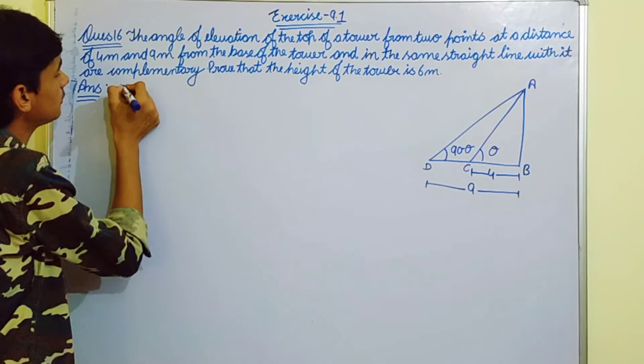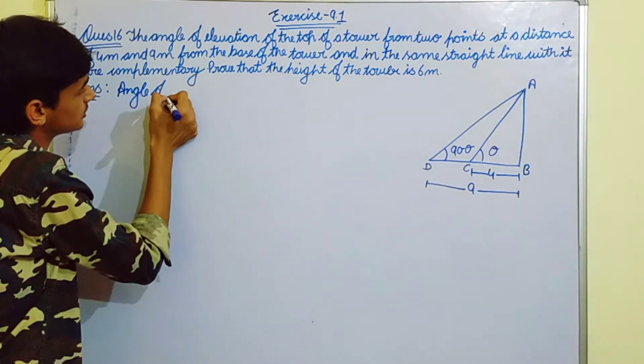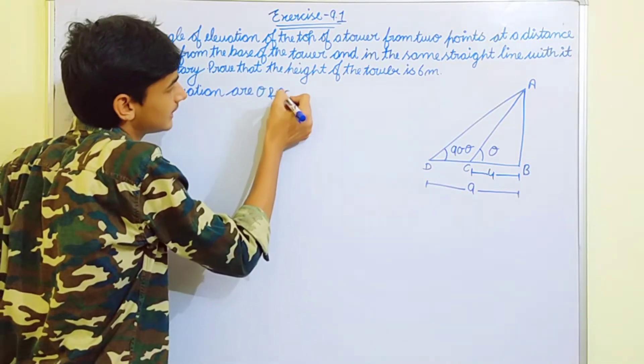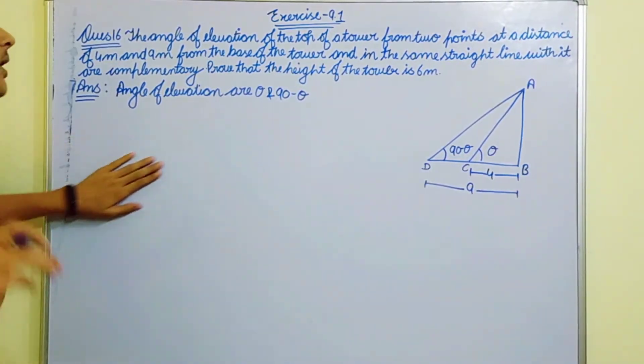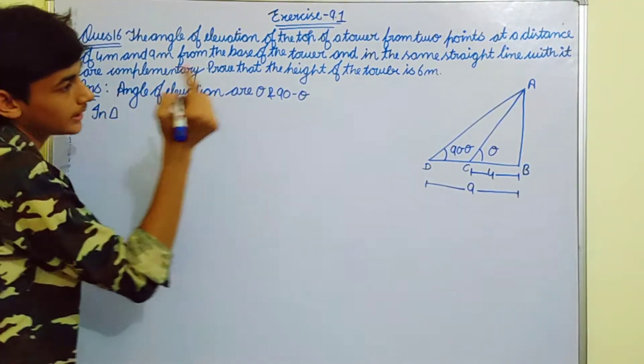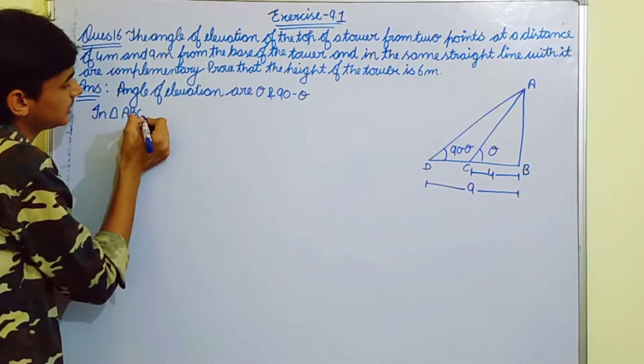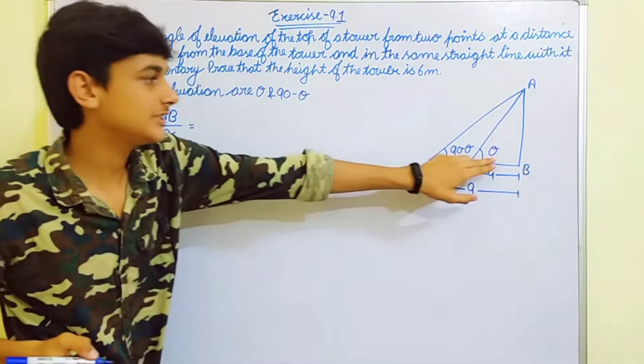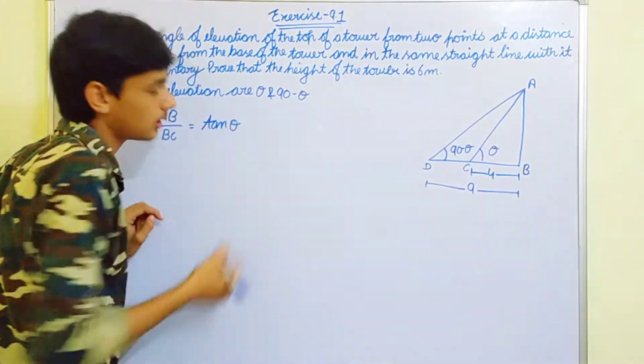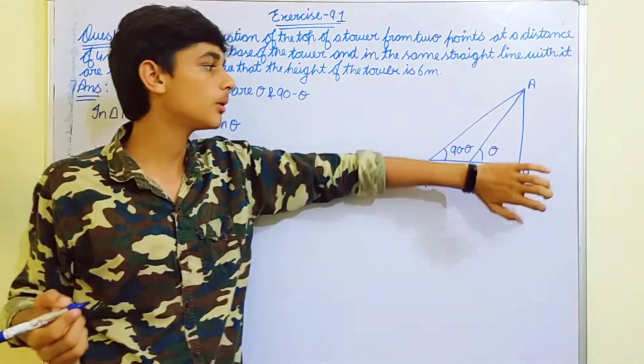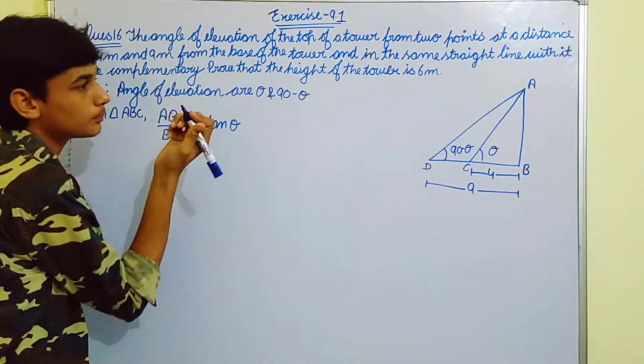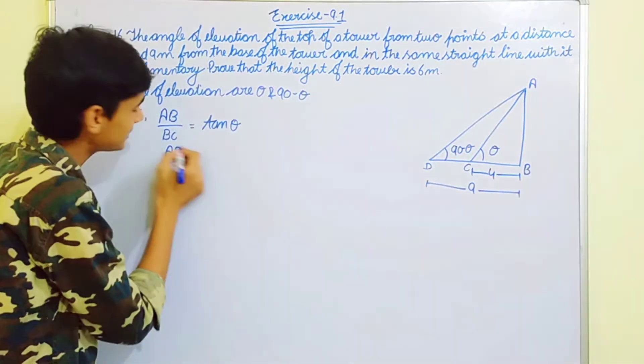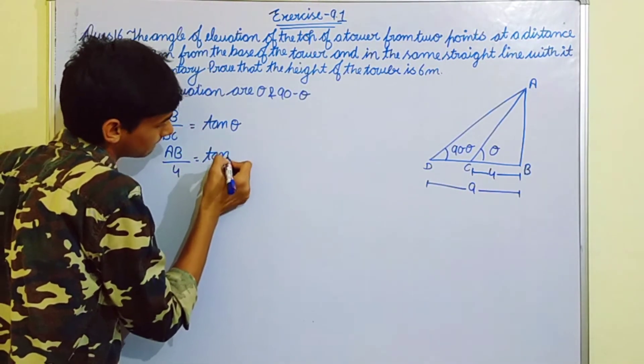In triangle ABC, angle of elevation, AB upon BC is tan theta. Tan theta is the opposite side perpendicular divided by base. AB ki value we don't know yet - we have to prove it equals 6. BC equals 4. So this is tan theta.